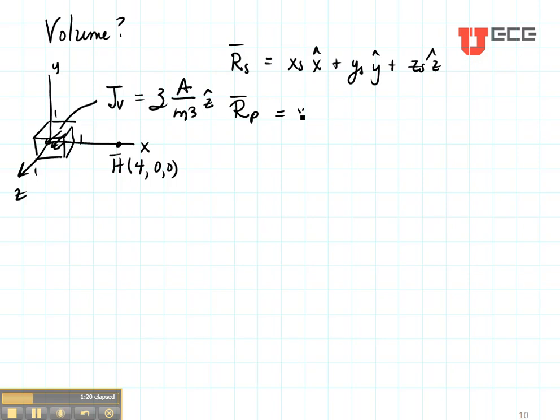So RP is going to be XP in the X direction plus YP in the Y direction plus ZP in the Z direction. But XP is 4, YP is 0, and ZP is 0, so I can simplify this one.